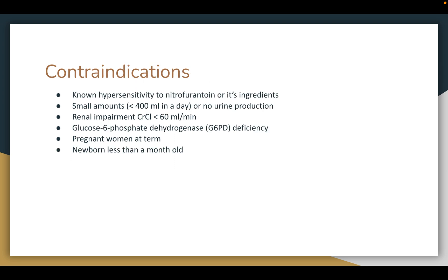Contraindications for this medication include known hypersensitivity to nitrofurantoins or its ingredients, small urine output of less than 400 mL per day or no urine production, renal impairment with creatinine clearance less than 60 mL per minute, glucose-6-phosphate dehydrogenase (G6PD) deficiency, pregnant women at term, and newborns less than one month old.